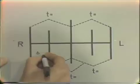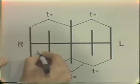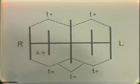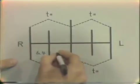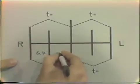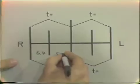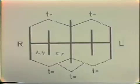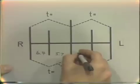The right central incisor width is 5.7 millimeters. On the left, the left central incisor is 5.4 millimeters. The left lateral incisor is 6.2 millimeters.